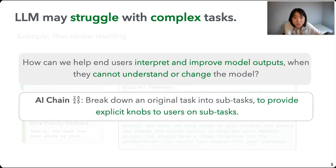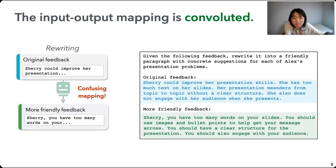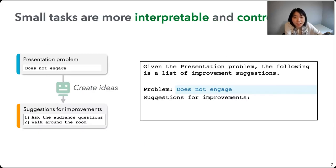Our way of doing it is to build AI Chains. Basically, we try to provide more explicit knobs to end users by breaking down an original task into subtasks. The intuition is that for many tasks similar to this rewriting use case, the problem from the end user's point of view is that the task has a lot of things going on, making it hard to build an input-to-output mapping. But this mapping does exist if we make the task smaller and more targeted.